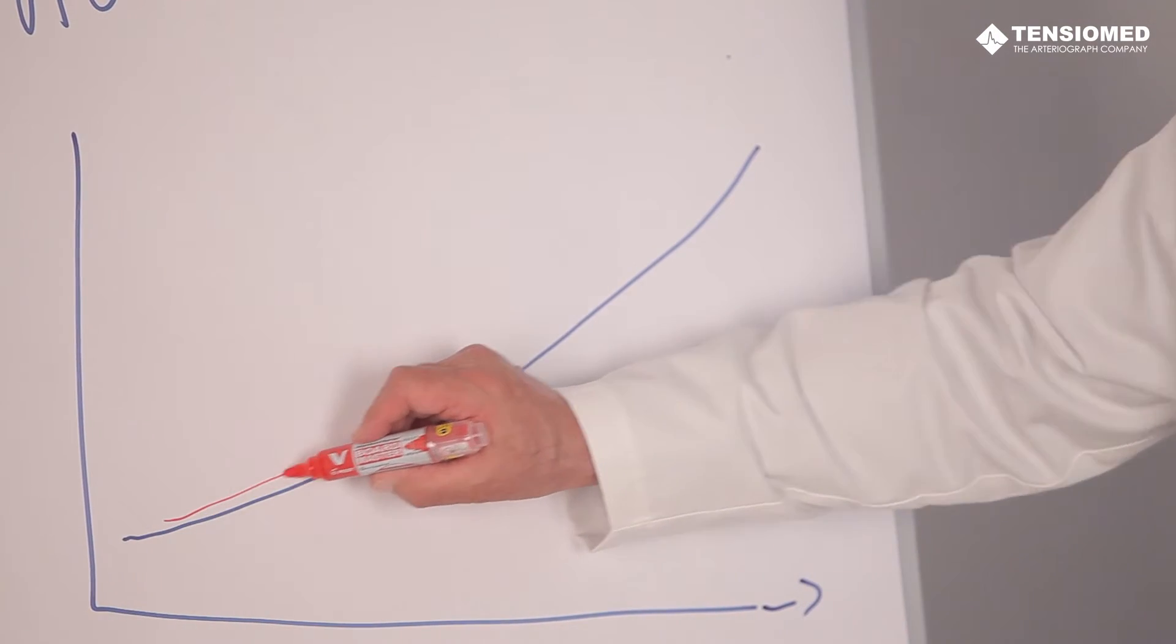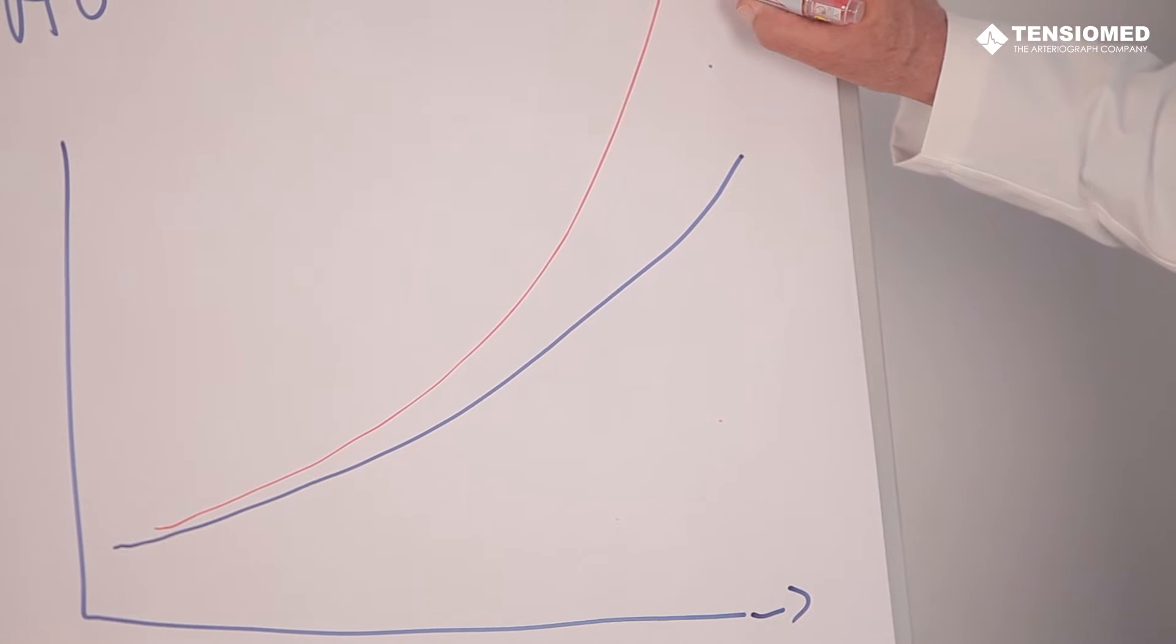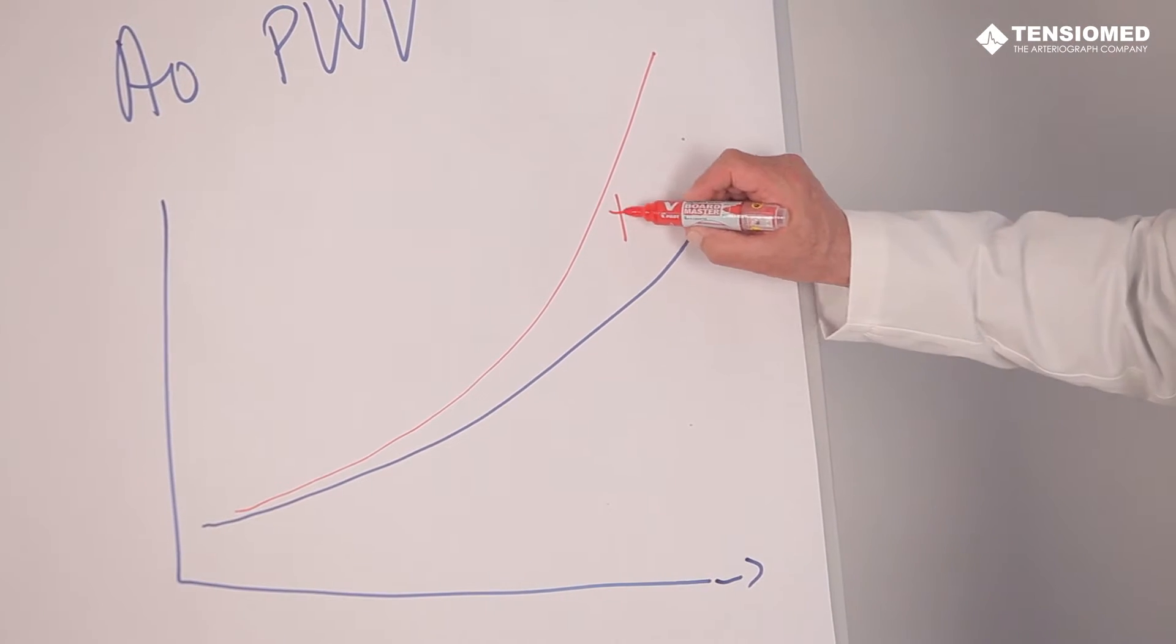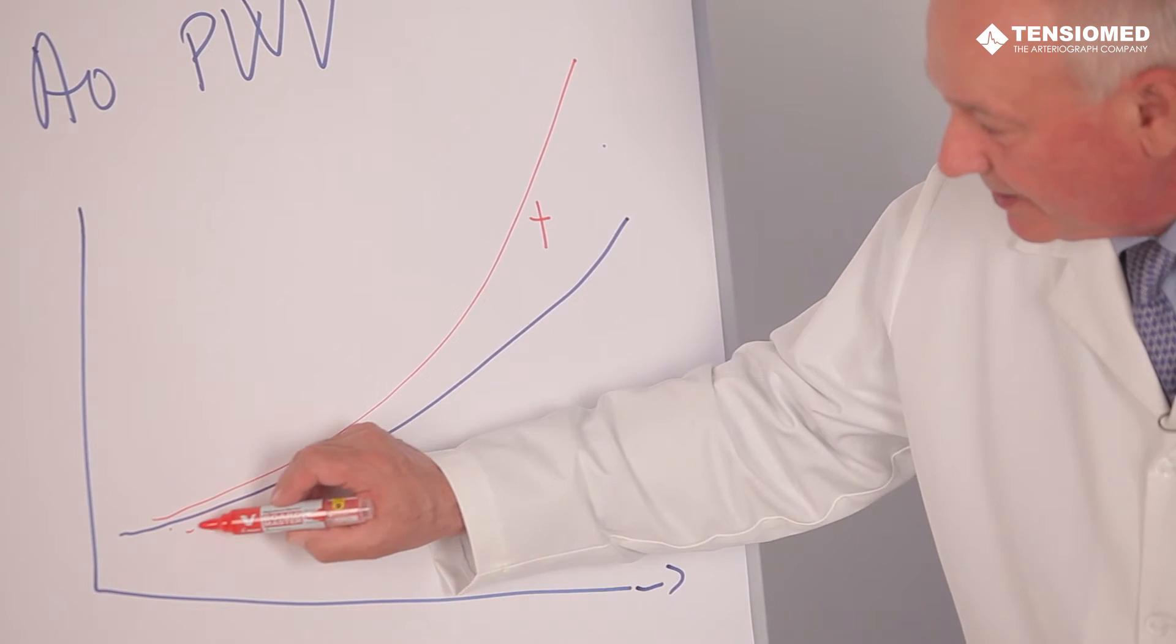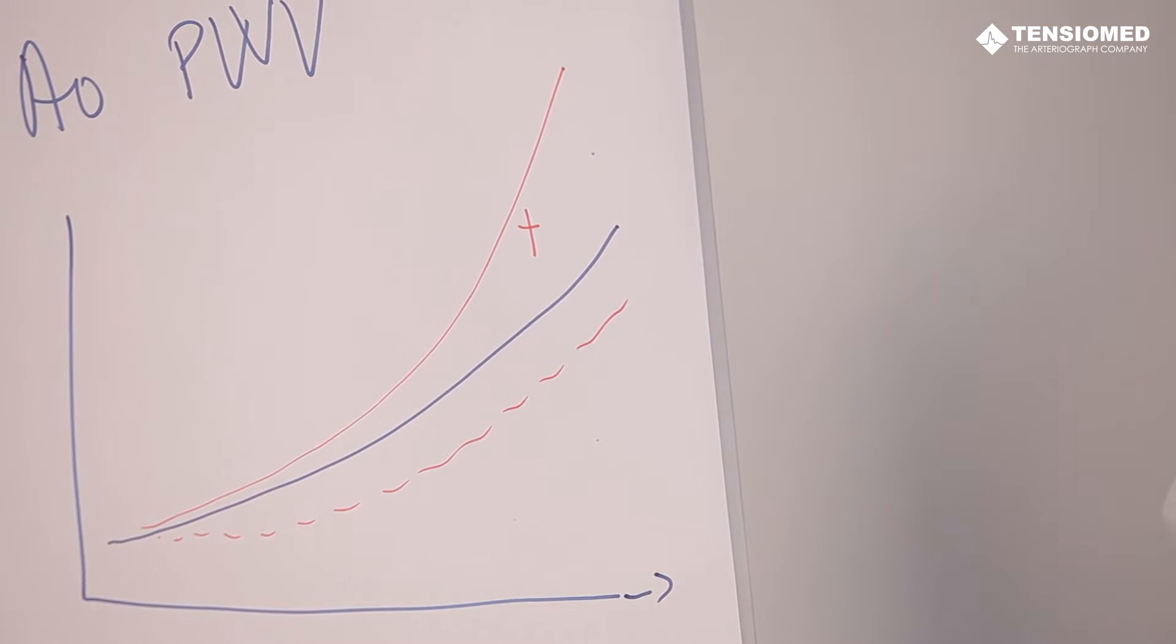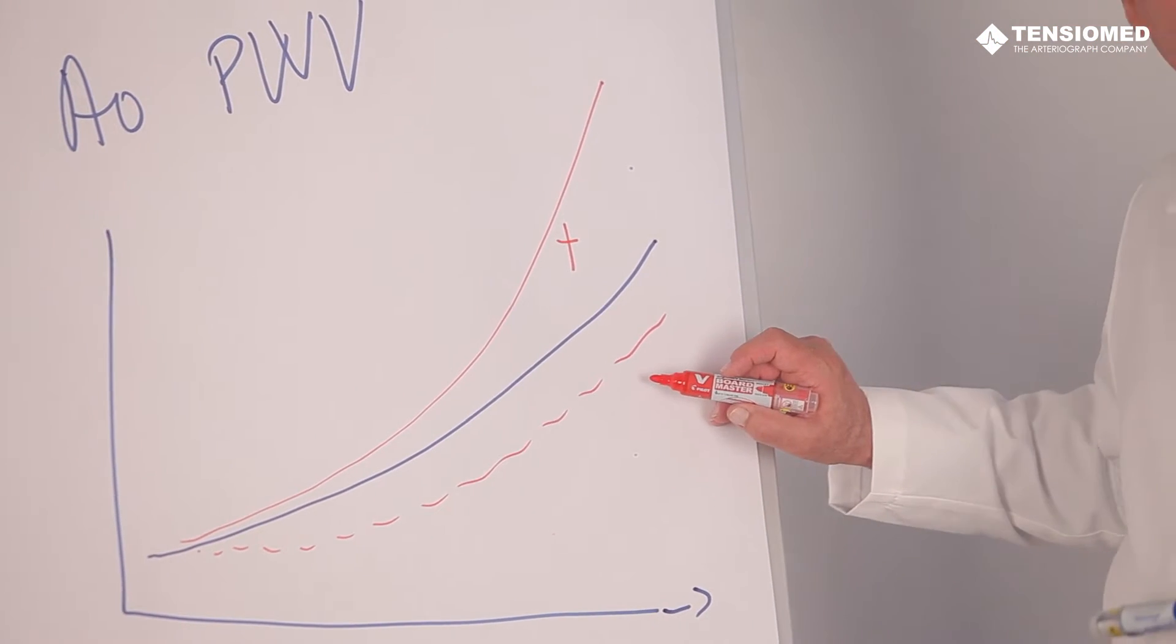One subject would show a very sharp increase in arterial age and unfortunately can die early. The second subject could have a very mitigated increase and can live longer.